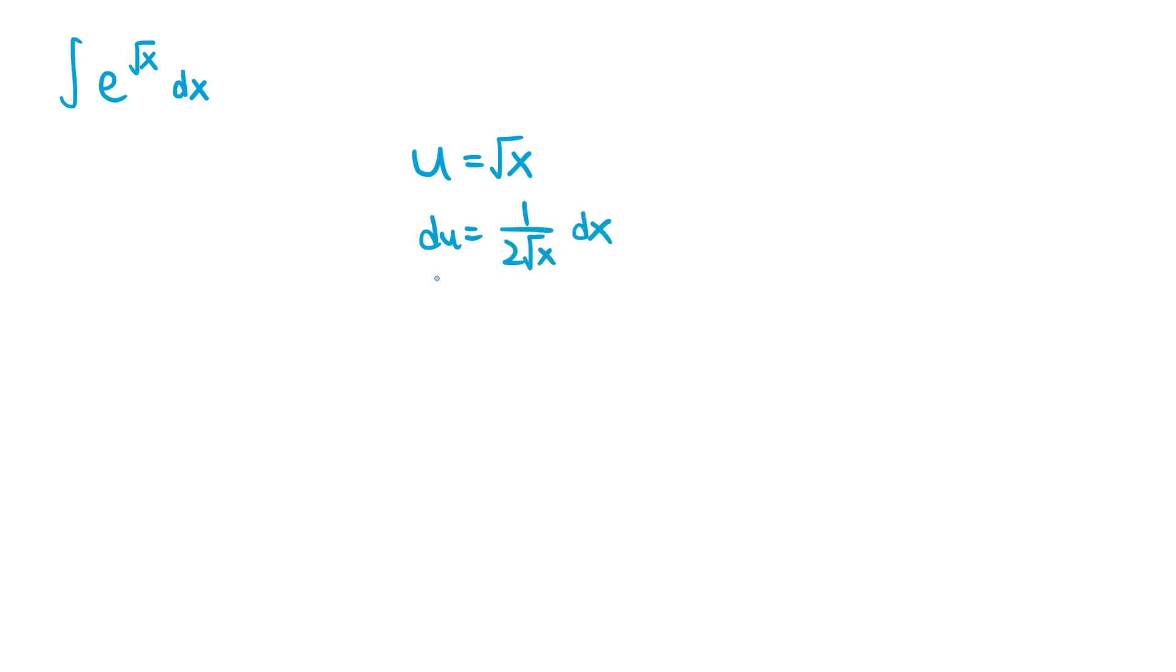If we multiply both sides of this equality by 2 square root of x, we get dx equals 2 square root of x du. Since we set u equal to the square root of x, we can rewrite 2 square root of x as 2u, so this is just equal to 2u du.